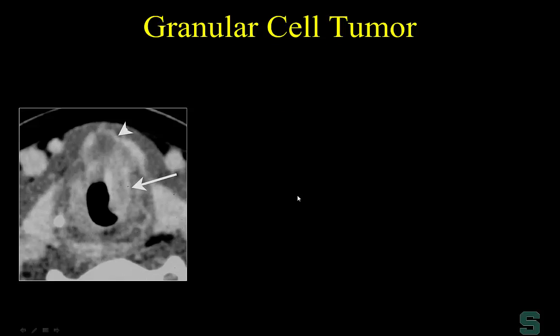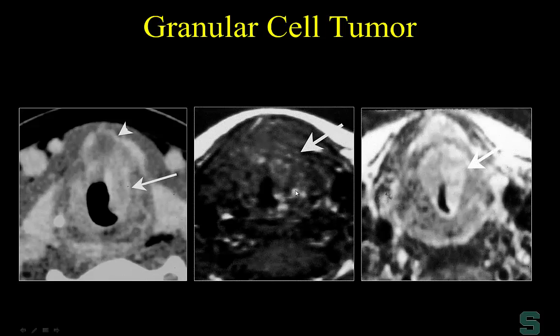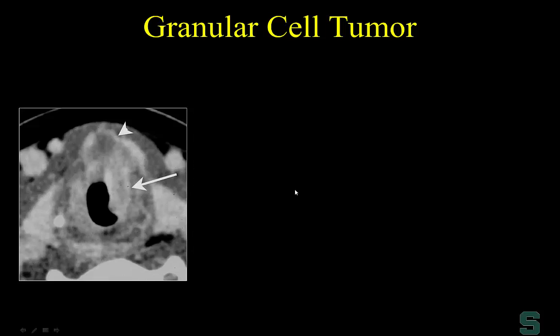This is a granular cell tumor localized to the larynx — a tumor with a characteristic spread pattern we published on. Many granular cell tumors are never imaged because they are small and surgeons resect them easily. But when they come to imaging, it's often the tip-of-the-iceberg phenomenon. Surgeons resect the endolaryngeal component, the patient recurs, and they return for multiple resections. The endolaryngeal component can be removed, but the tumor has deep or endophytic spread.